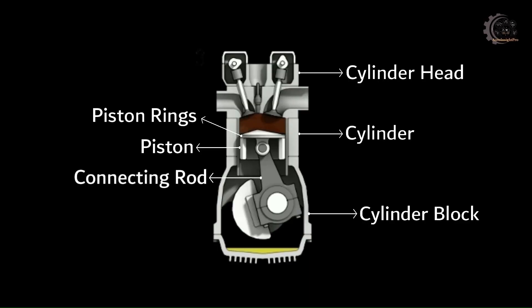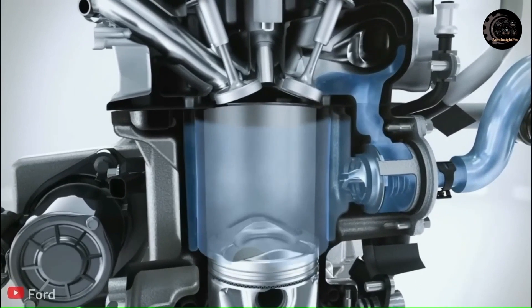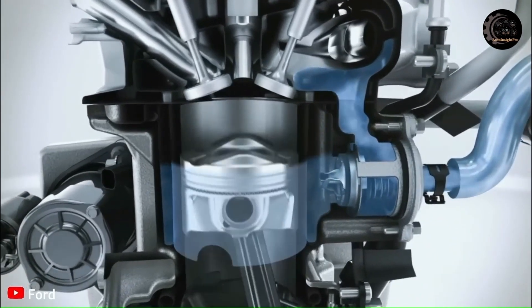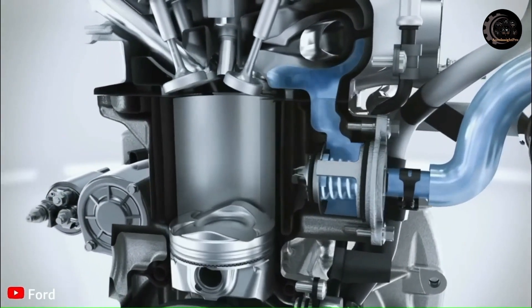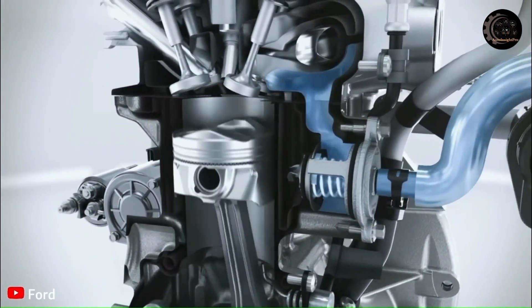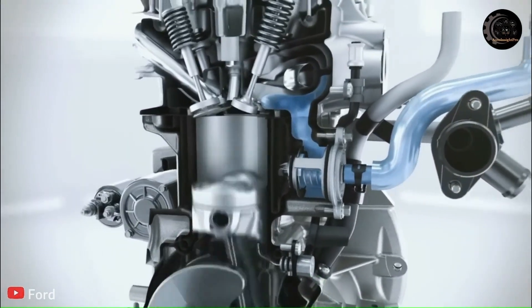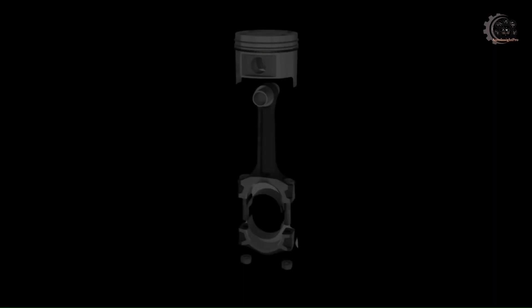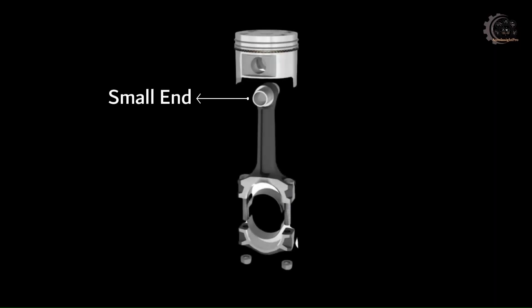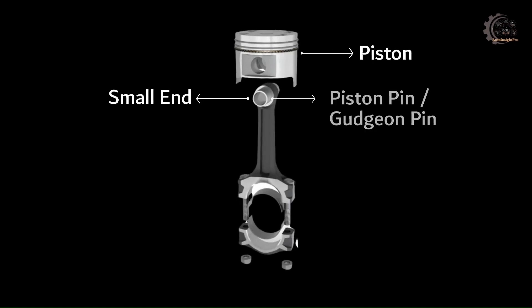The connecting rod connects the piston to the crankshaft, converting the reciprocating motion of the piston into rotary motion of the crankshaft. The upper end, called the small end, carries the piston by means of a floating pin called the piston pin or gudgeon pin. The lower end, called the big end, connects to the crankshaft through the crank pin.